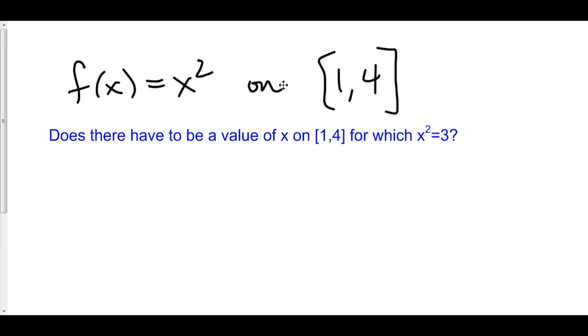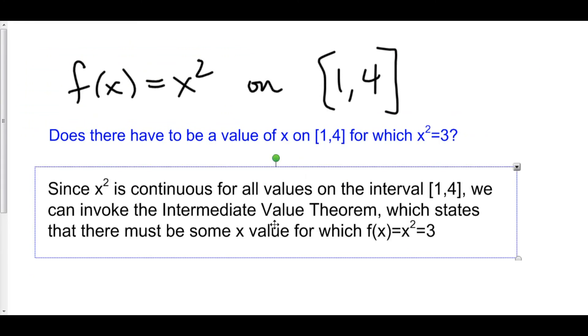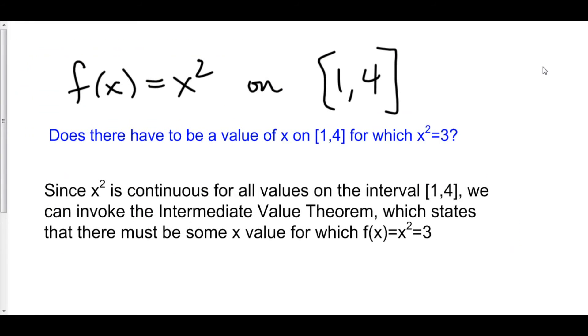F is continuous from a to b. So x squared is continuous from one to four. Therefore, we can use IVT. And the way that we would use it is as such: Since x squared is continuous for all values on the interval from one to four, we can invoke the intermediate value theorem, which states that there must be some x value for which f of x equals x squared equals three.